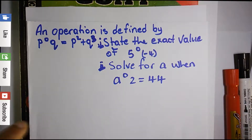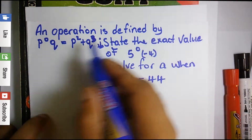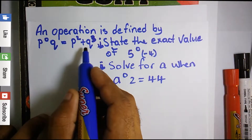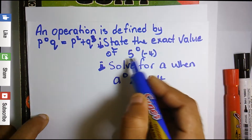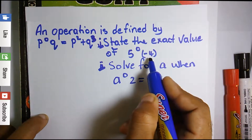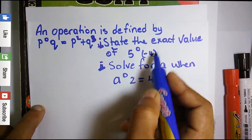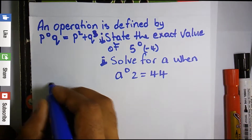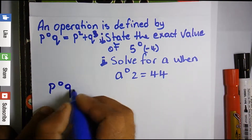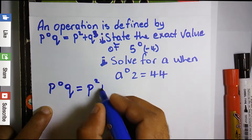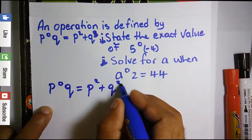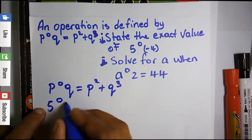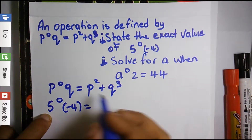An operation is defined by P O Q = P² + Q³. We need to state the exact value of 5 O (−4). I'm going to rewrite the operation: P O Q equals P squared plus Q cubed. Now we're supposed to evaluate 5 O (−4).